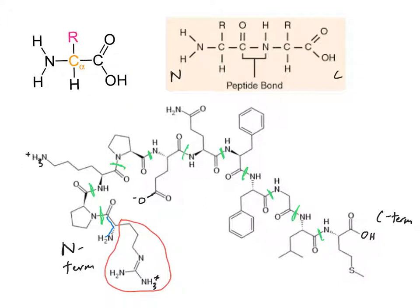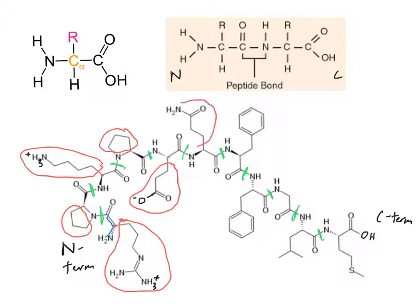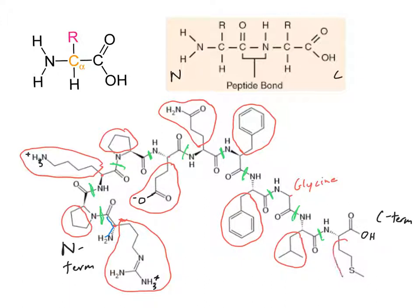Now we can look for the side chains — remember, side chains always come off the alpha carbon. We already found the first side chain off the first alpha carbon. Moving through the chain, each alpha carbon has a side chain branching off of it. One amino acid here actually doesn't have a visible side chain — that's the unique amino acid glycine, where the side chain is simply a hydrogen, but it still counts as the side chain of that residue.